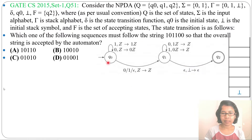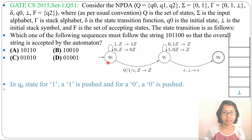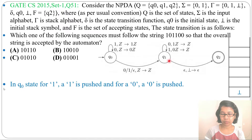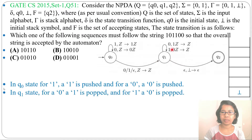Let's analyze the PDA. In Q0 state, for input 1, a 1 is pushed; for input 0, a 0 is pushed. In Q1 state, for input 1, a 0 is popped; for input 0, a 1 is popped. So which language will it accept?